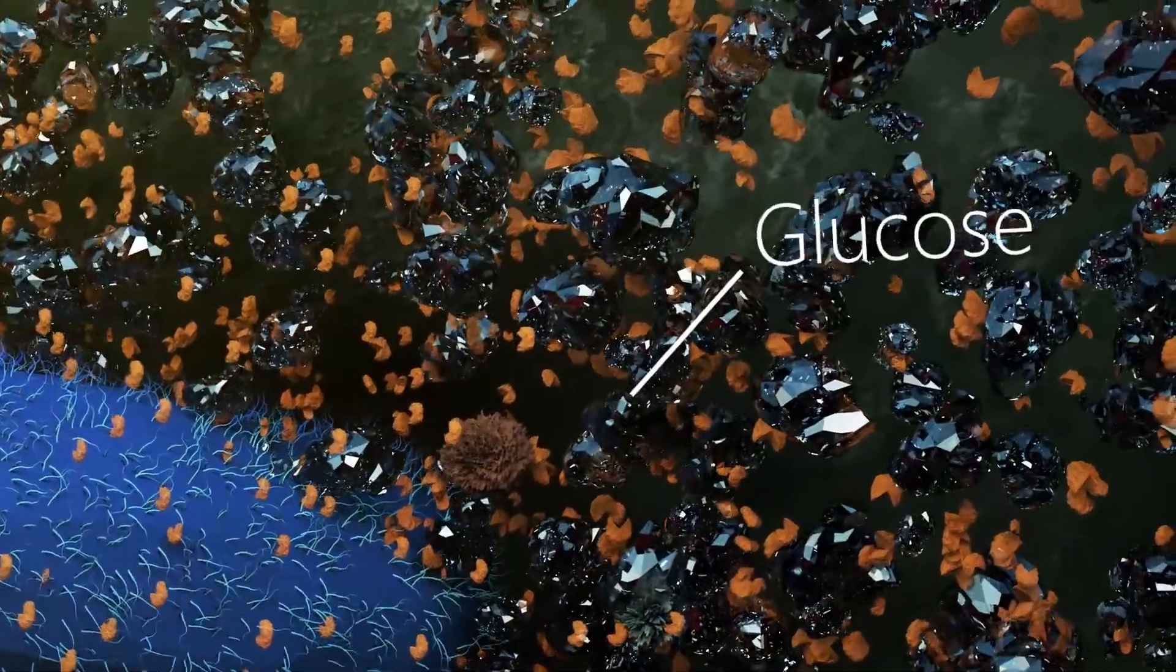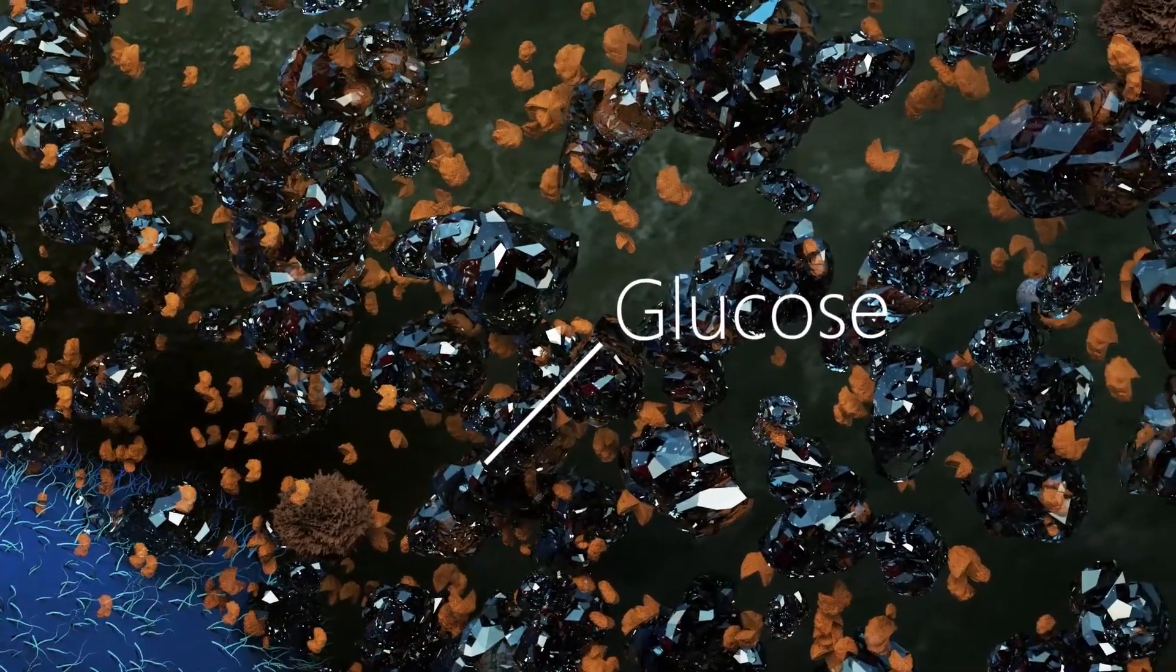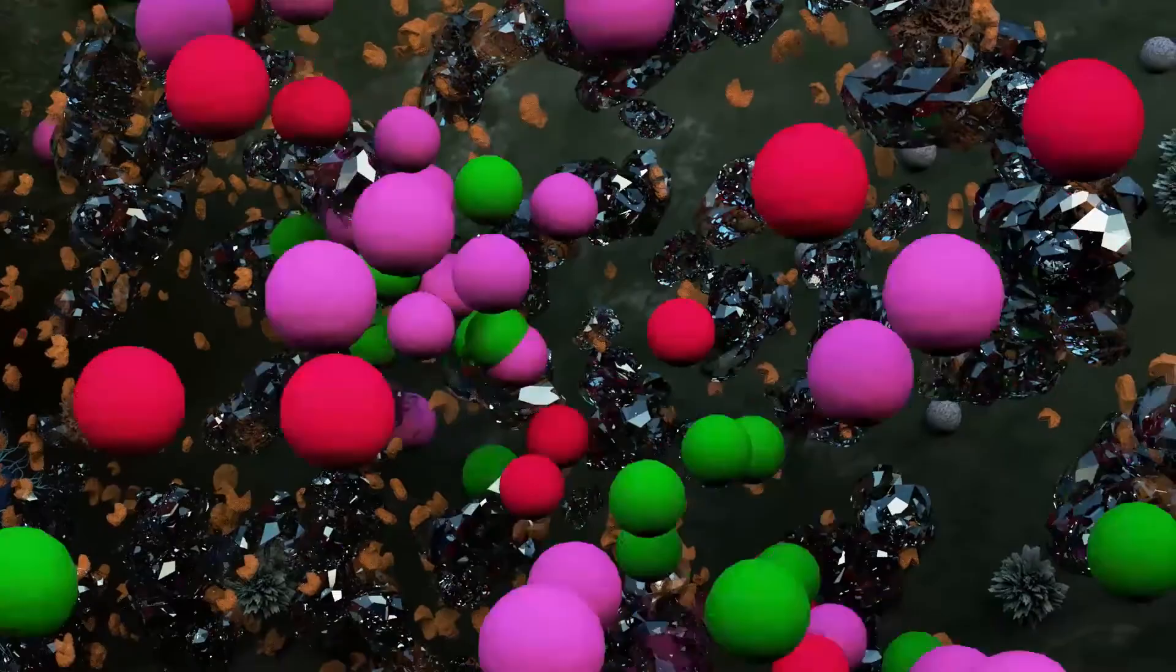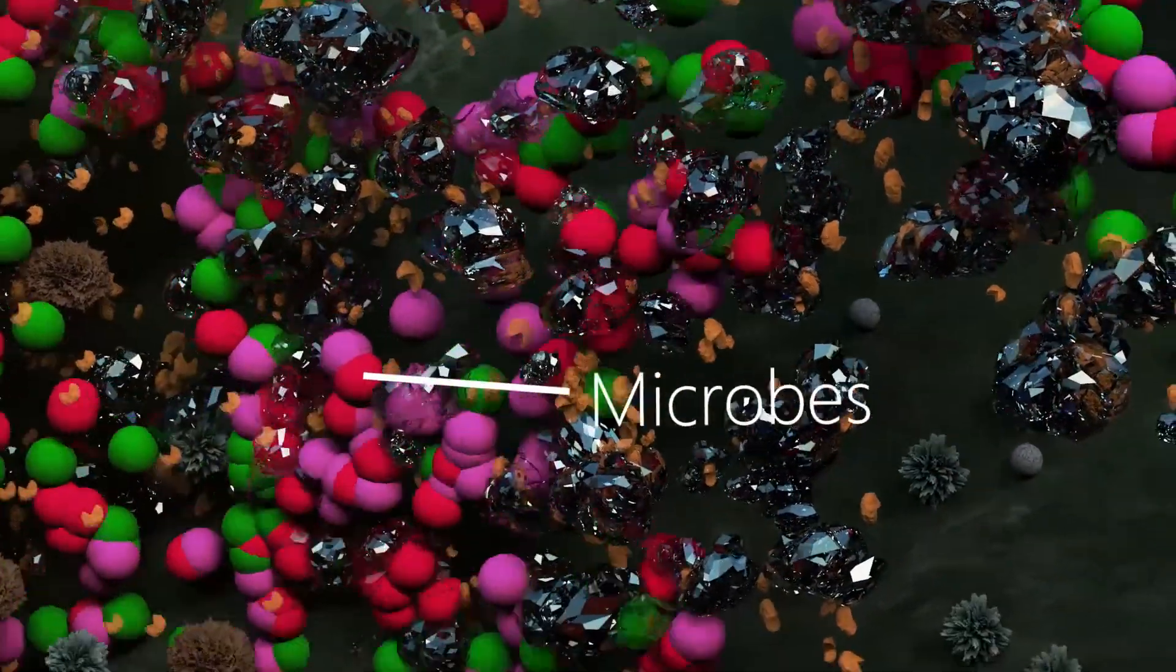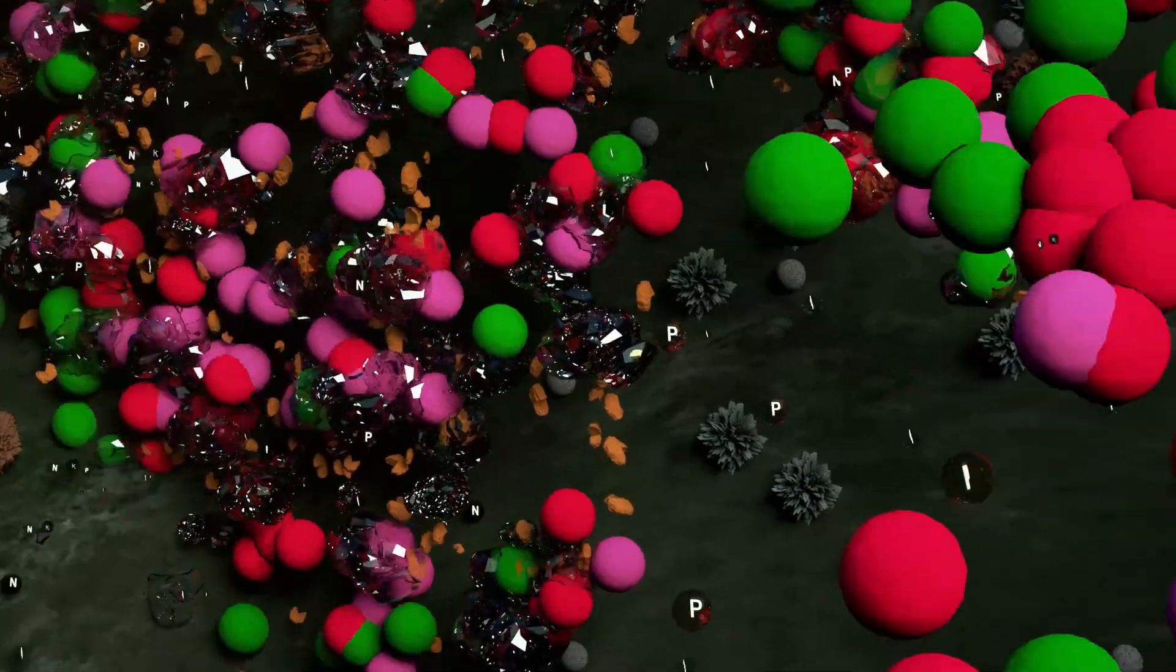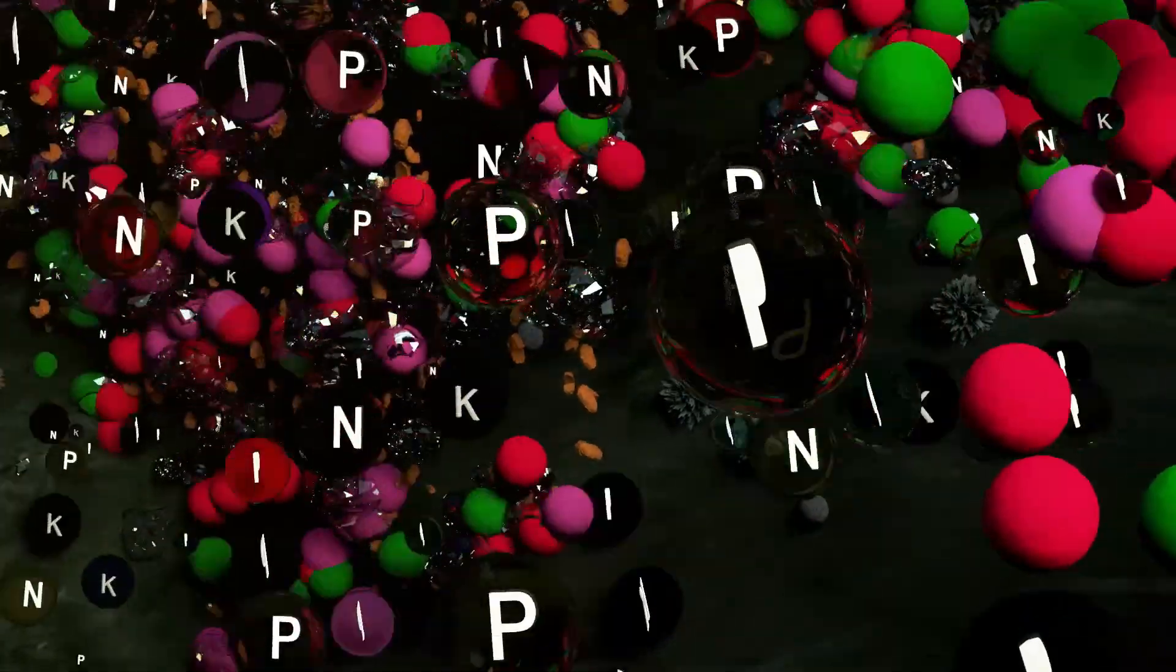The endoglucanase can convert plant debris cellulose into sugars. Sugar is food to the soil microbes, increasing the transformation of organic matter into nutrients. The result is more nutrient availability to fuel plant growth.